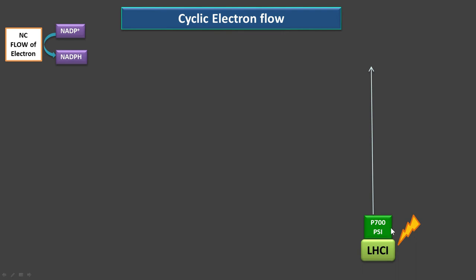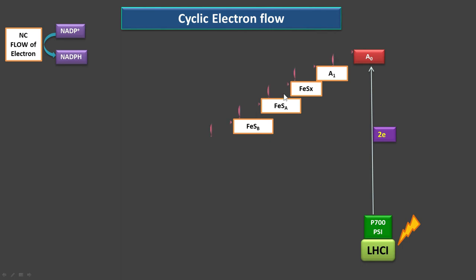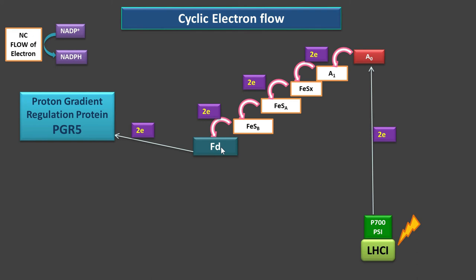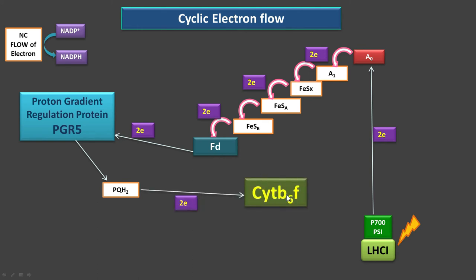In cyclic electron flow, 700 nm light energy is received by PS1 and two electrons are released, accepted by the chlorophyll-like molecule A0. From there they move through redox components to ferredoxin, and from ferredoxin they are given to a recently discovered protein — PGR5, known as proton gradient regulation protein. PGR5 reduces PQ to PQH2, two electrons are given to cytochrome b6f complex, two protons are released into the thylakoid lumen, and electrons are received by plastocyanin — ultimately returning to PS1. This flow is cyclic.